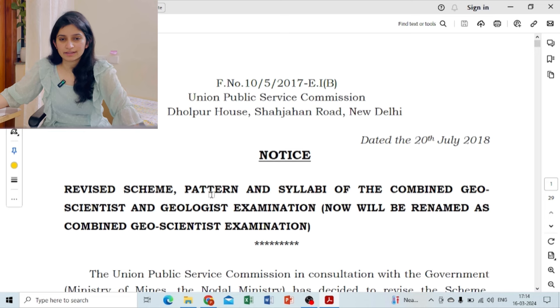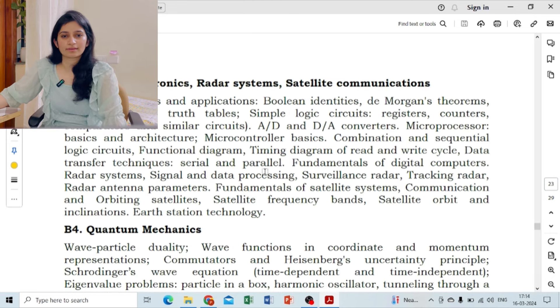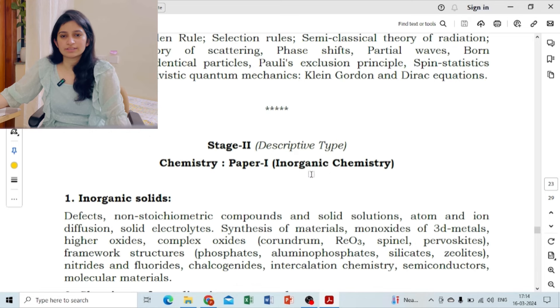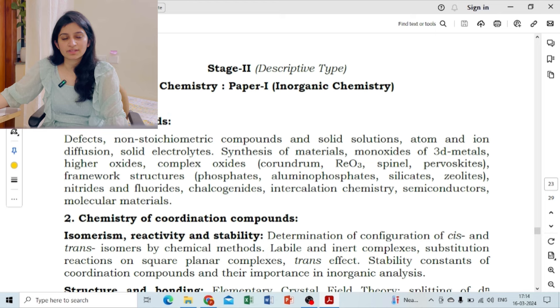This is the revised pattern and syllabus for Combined Geoscientist Examination. Stage 2 descriptive type means subjective paper for mains examination. Paper 1 is of inorganic chemistry. First is inorganic solids - a very important chapter because I didn't spend much time on it.